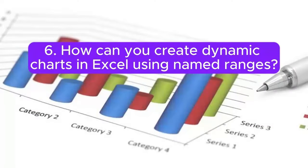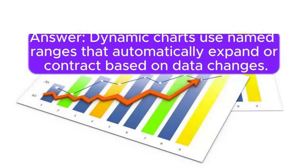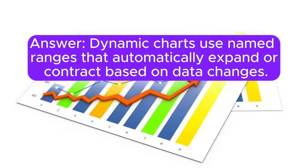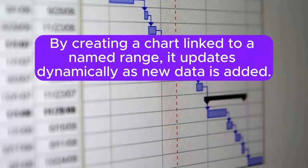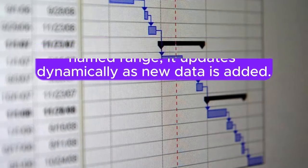Question 6: How can you create dynamic charts in Excel using named ranges? Dynamic charts use named ranges that automatically expand or contract based on data changes. By creating a chart linked to a named range, it updates dynamically as new data is added.